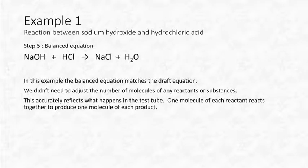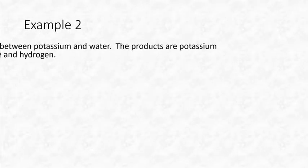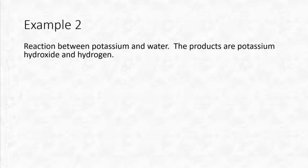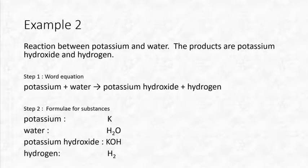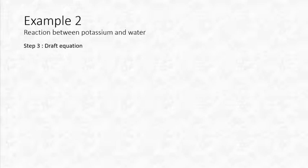This reflects what's happening in the test tube: one molecule of each reactant produces one molecule of each product. Now let's look at another example: the reaction between potassium and water, which produces potassium hydroxide and hydrogen. Word equation: potassium + water → potassium hydroxide + hydrogen. The formulas are K, H₂O, KOH, and H₂.